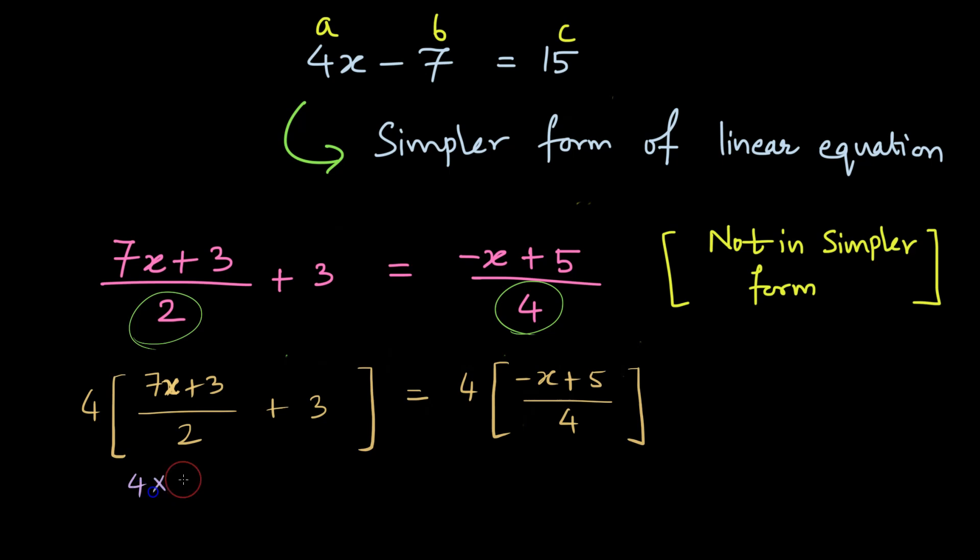So when we multiply 4 times 7x plus 3 divided by 2, we also multiply 4 with the 3 as well. Do not forget that. So 4 times 3 is equal to 4 times minus x plus 5 divided by 4.